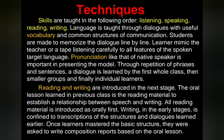Through repetition of phrases and sentences, a dialogue is learned first by the whole class, then smaller groups, and finally individual learners. Reading and writing are introduced in the next stage. The oral lesson learned in the previous class serves as reading material to establish a relationship between speech and writing. All reading material is introduced orally first. Writing in the early stages is confined to transcription of structures and dialogues learned earlier. Once learners have mastered the basic structure, they were asked to write composition reports based on the oral lesson.